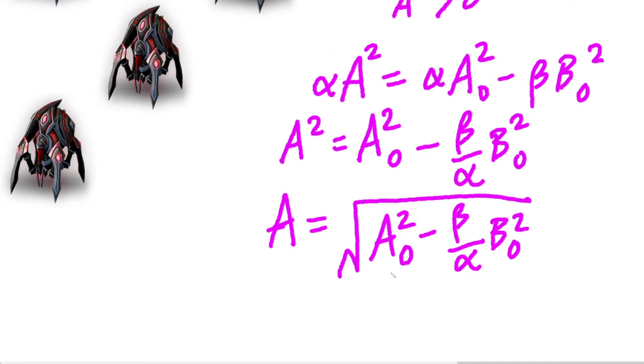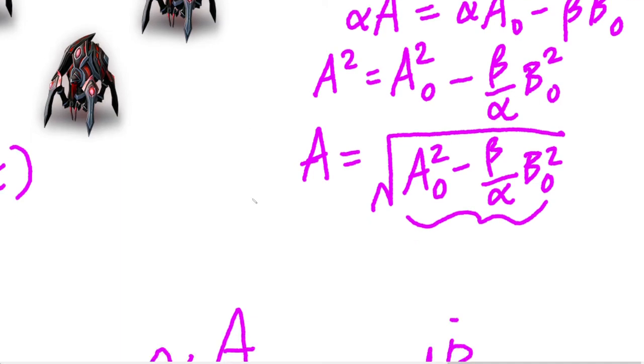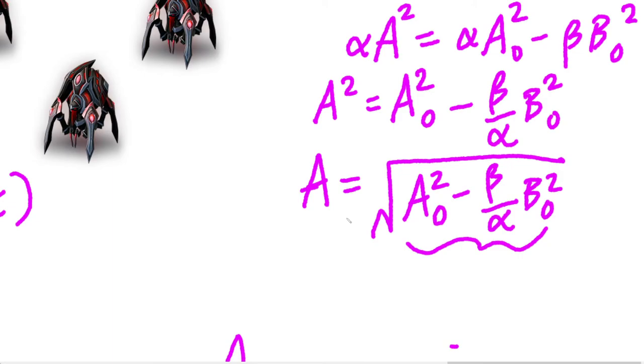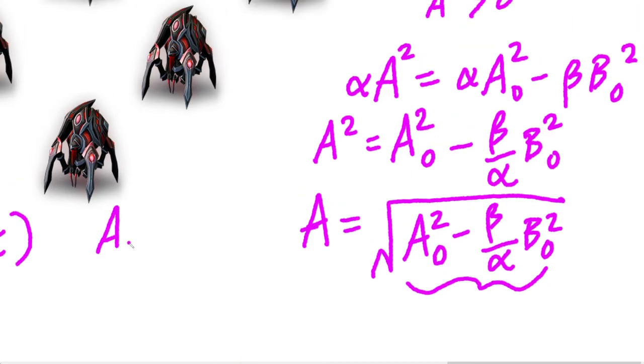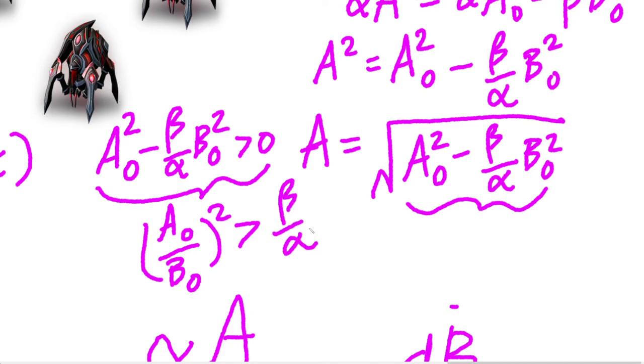Otherwise, it's imaginary and the model is sort of meaningless because we know that B can't go into the negative. Neither of them can go into the negative because once you are out of an army, you're out of an army. So, we're looking for an inequality where A0 squared minus beta over alpha B0 squared is greater than 0, such that some members of A will survive when B is completely eliminated. After solving this inequality, we can get something in the form A0 over B0 squared must be greater than beta over alpha.